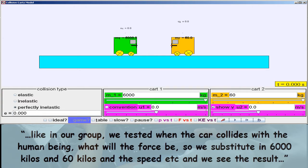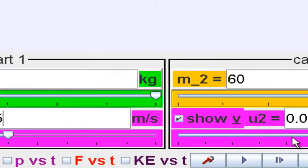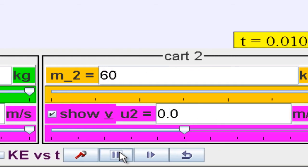So we just started with 6,000 kilos, 60 kilos, and then the speed, and then we saw the result.